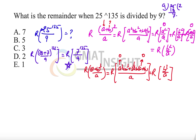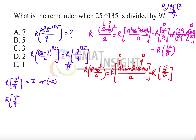Now we apply the cyclicity principle — finding where the remainders repeat. When 7¹ is divided by 9, the remainder is 7 (or equivalently −2). When 7² = 49 is divided by 9, the remainder is 4 (or equivalently −5), since 49 = 9 × 5 + 4.